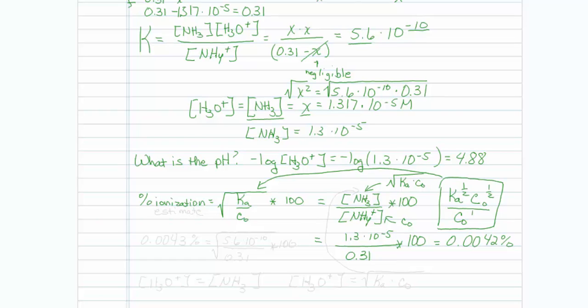And just to see that I get the right number that agrees with my other calculation, let me plug it in for you. That would be the square root of 5.6 times 10 to the minus 10 over 0.31 times 100. And when I plug that into my calculator, I get the exact same number within a little bit of sig fig error, 0.00425 or 43 percent.